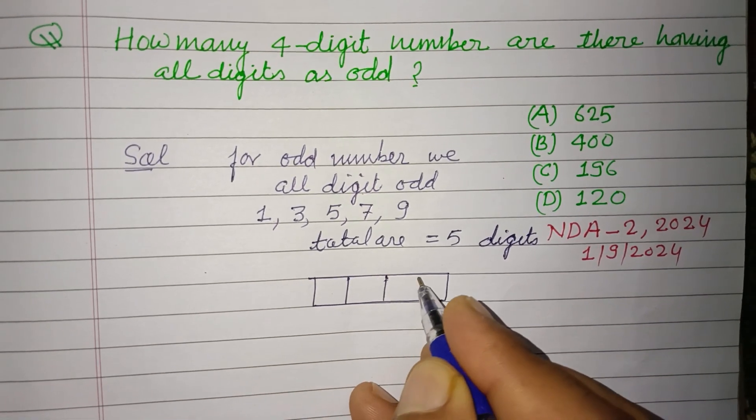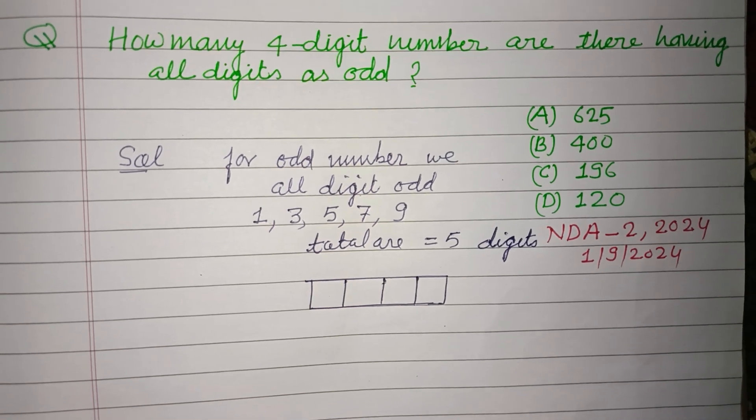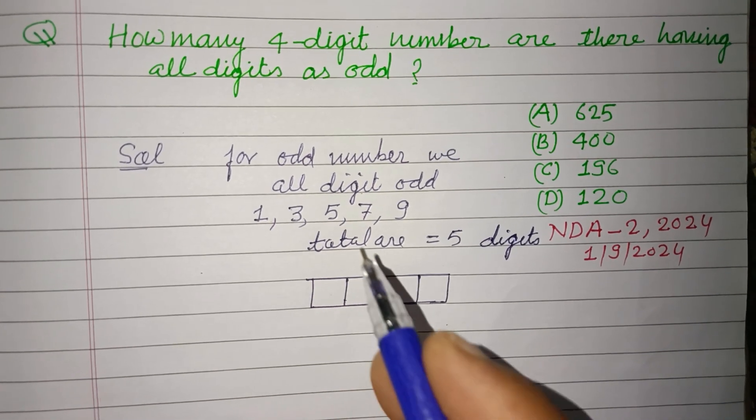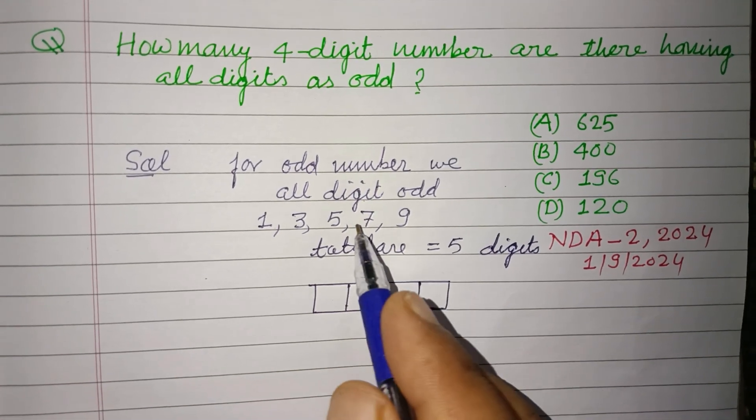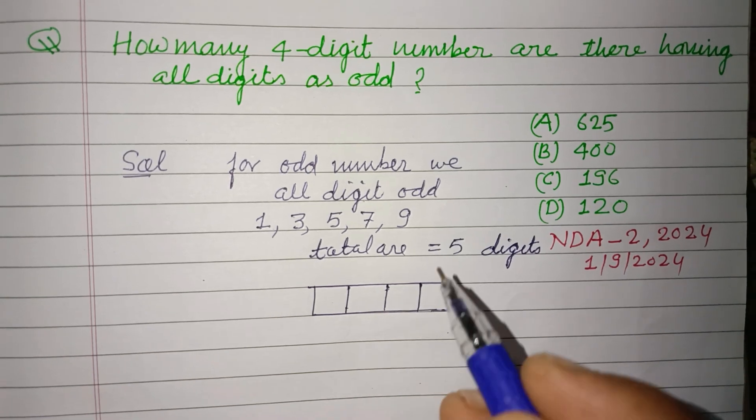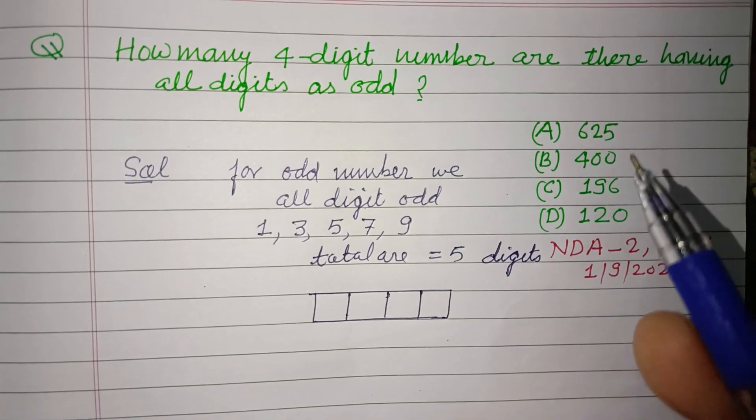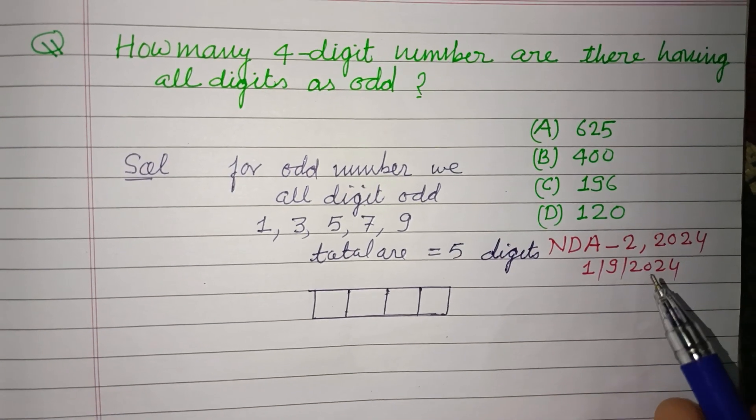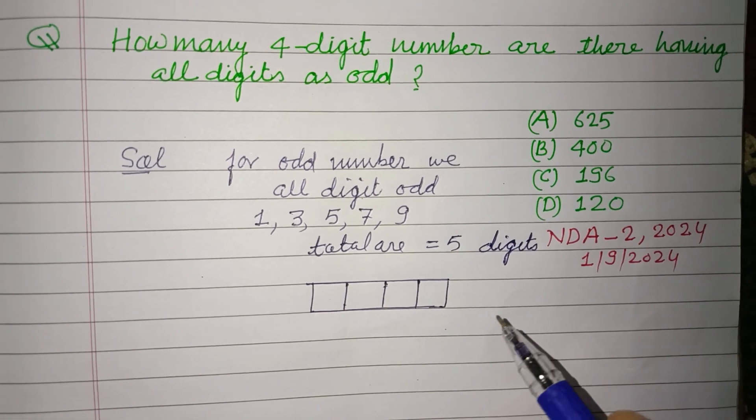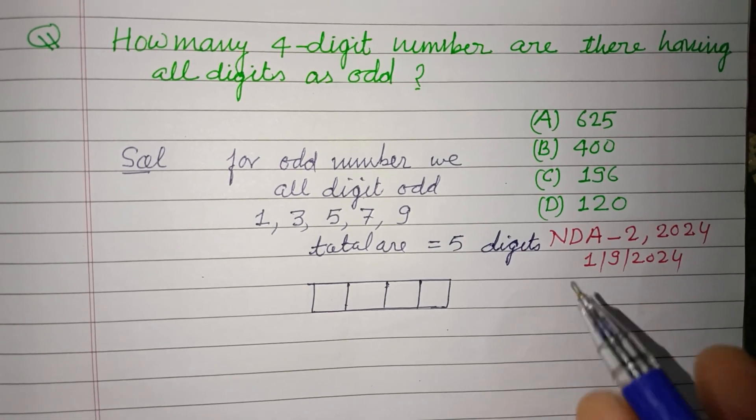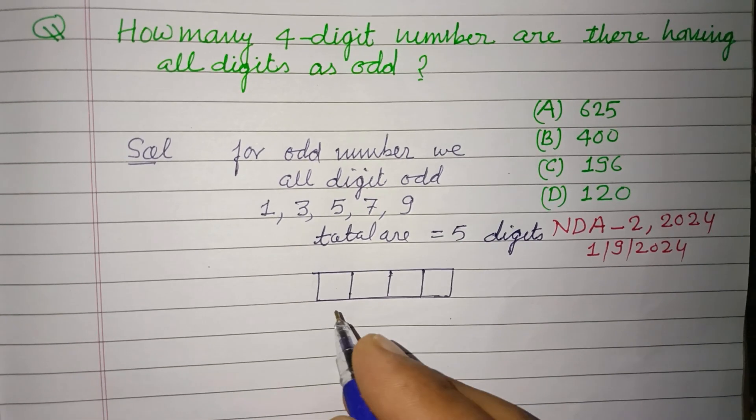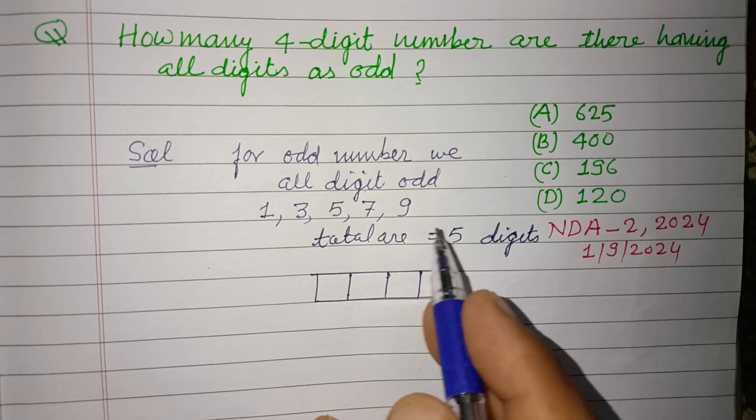And we have four places: one, two, three, four. These four places can be filled by these five odd digits. Because the condition of repetition is not given, whether repetition is allowed or not, so we take repetition.